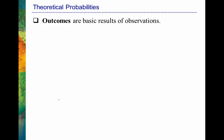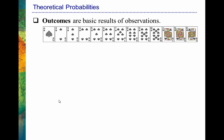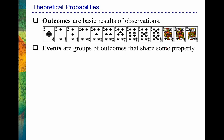Let's talk about the theoretical perspective using a card example, and I'll introduce some terms. When we're talking about outcomes, we're essentially talking about the basic results of our observations. A deck of cards has four different suits — here we have just the spades represented. In each suit there are 13 different cards: an ace, two through ten, then face cards — jack, queen, king. So there are 52 cards total, 13 cards in each suit, four suits. Events are groups of outcomes that share some property — for example, all spades.